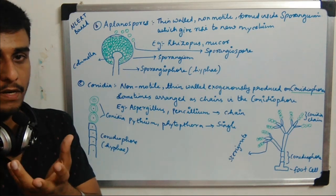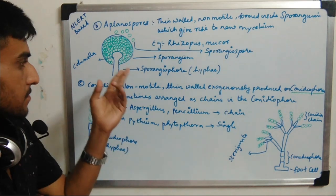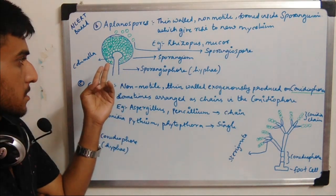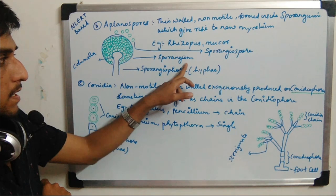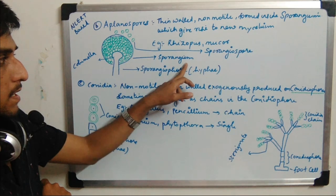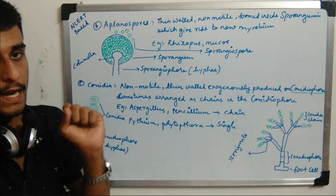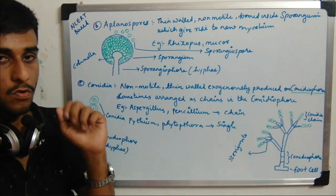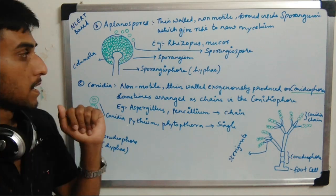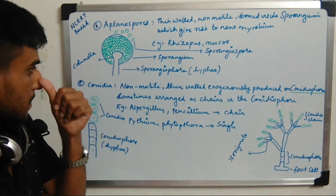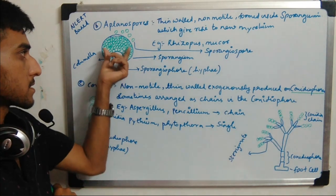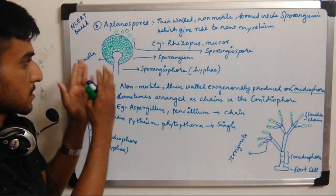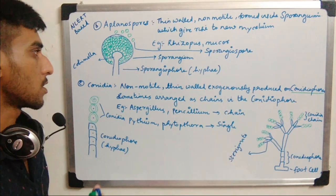The spores are produced inside the sporangium. The property of aplanospores is that they are non-motile — they lack flagella. There is another structure known as the columella, which holds all the spores together. After a particular time during favorable conditions, these spores get dispersed into the environment.